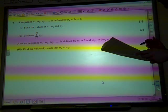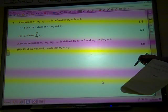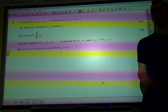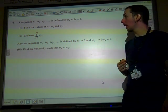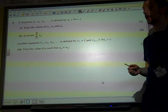Question four. Sequences and series. A sequence U1, U2, U3 is defined by Un is 5n plus 1. State the values of U1, U2, and U3.